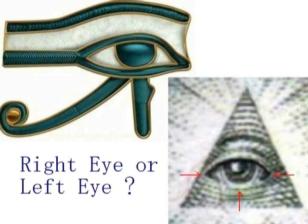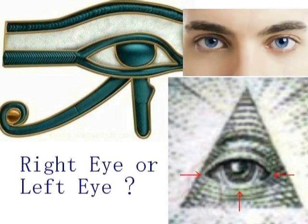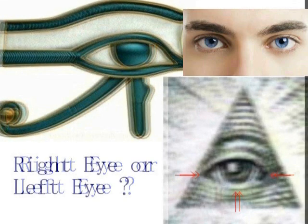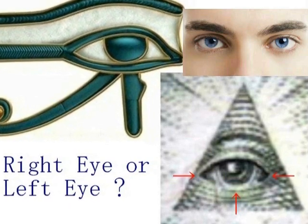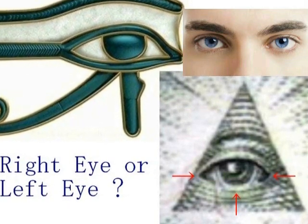続いて彼は、イルミナティで使っている目は左目、つまり盲目の目であると述べました。その友人が言わんとしていたことは、左目を使っているフリーメイソンやイルミナティは間違っているということでした。が、調べてみると、フリーメイソンやイルミナティの多くは右目でした。